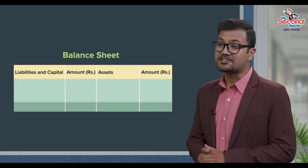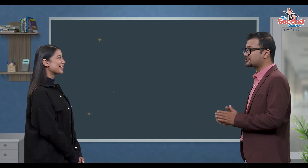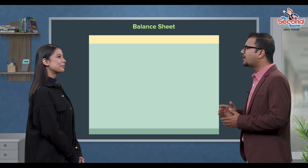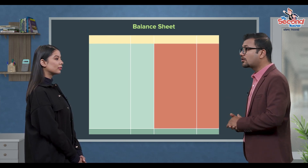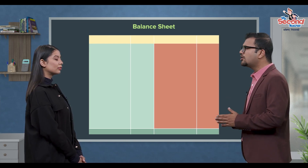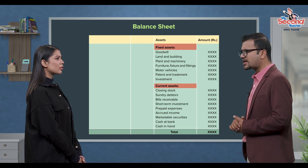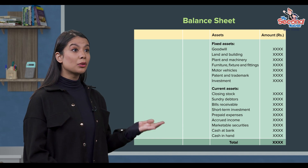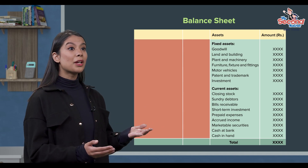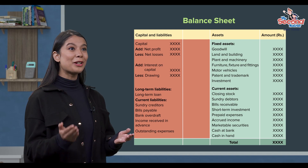Very good. So you can revise the balance sheet. You can also make a balance sheet. That's right, teacher. Yes, teacher. A balance sheet has 4 columns. The right side has 2 columns: assets and the amount.